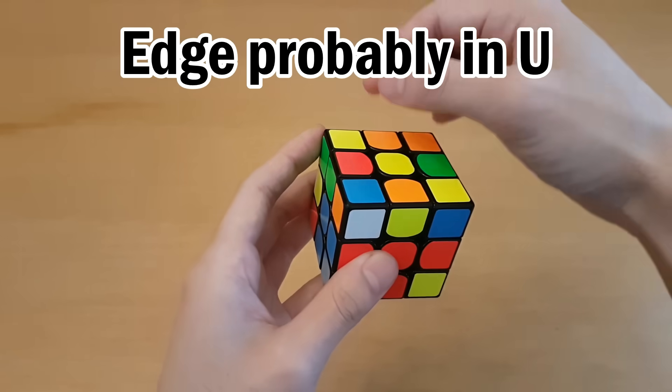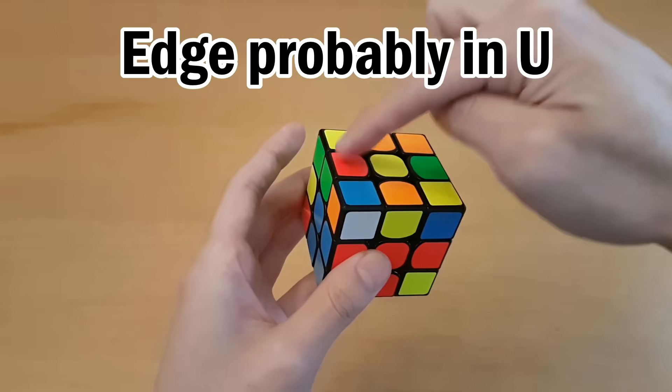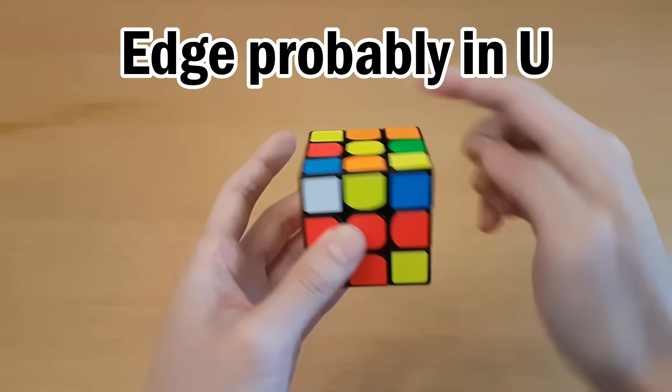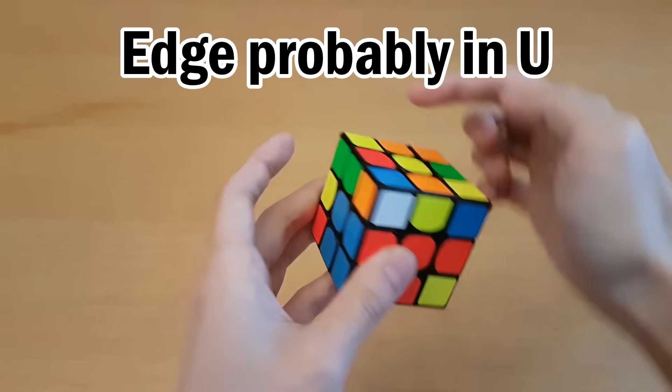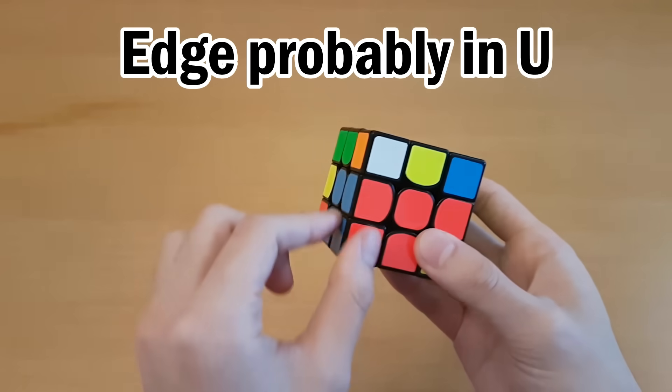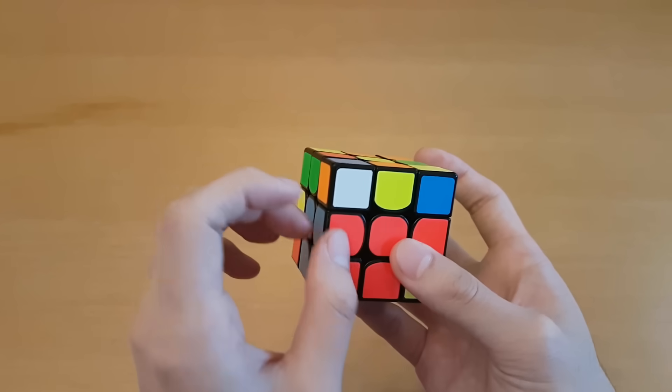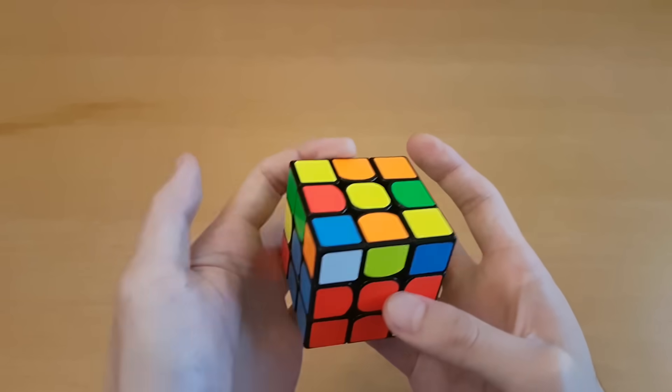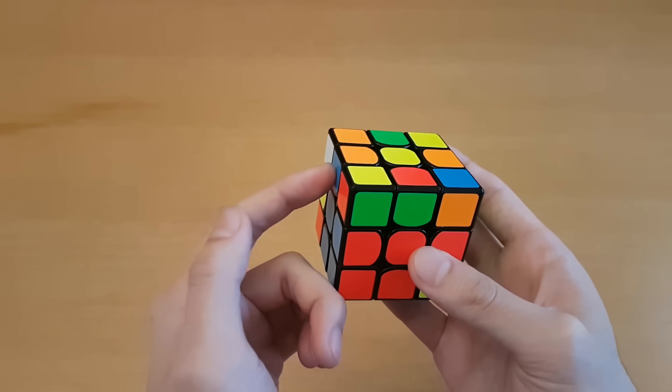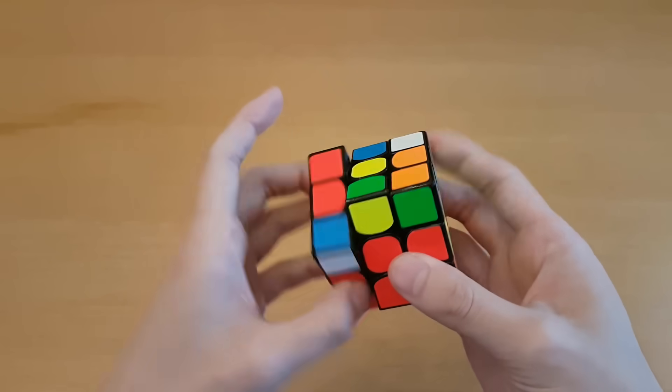Chances are its corresponding edge will also be somewhere in the top layer, because there are four slots that can be in the top layer, while only four spots it can be in the middle layer, but you would have solved a slot, so chances are it's in the top layer. And if it's in the top layer, all the U moves you just did earlier from solving this pair should have made it not very hard to spot as you did those moves. And then you can just go and solve this pair afterwards.